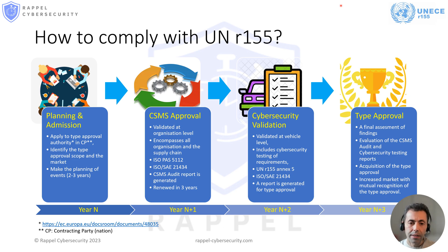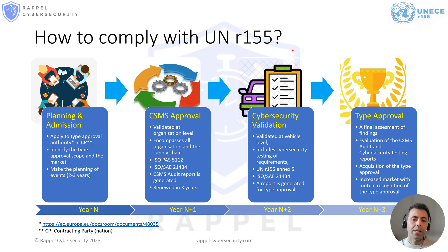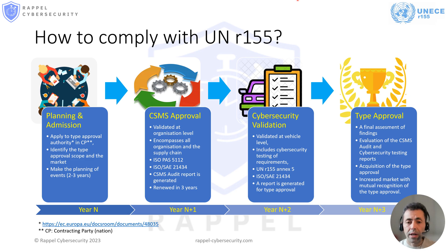An audit report is generated at this step that shows the maturity of the CSMS as well as the gaps and the action plan if it is not successful. Generally, the next step — the technical validation of cybersecurity at product level — will not be possible if CSMS is not approved. The technical validation will consist of literally testing the cybersecurity features of the product with respect to the threats listed in UNR 155. This will also show whether the CSMS approved in the previous phase is respected or not. The work products created during development and testing according to ISO SAE 21434 will accompany the cybersecurity validation. Once the tests are completed, a report will be generated that gathers all evidences.